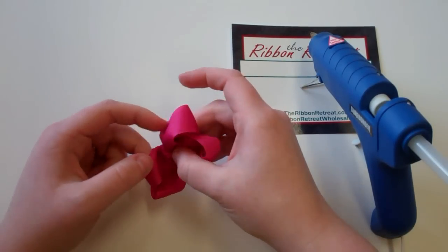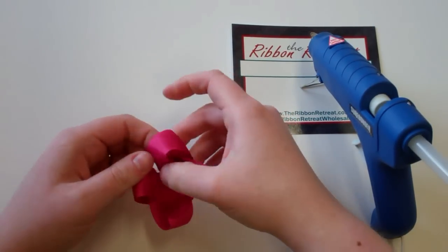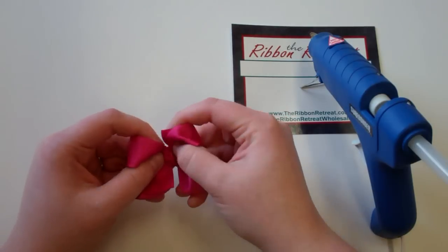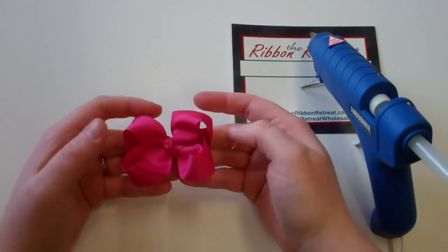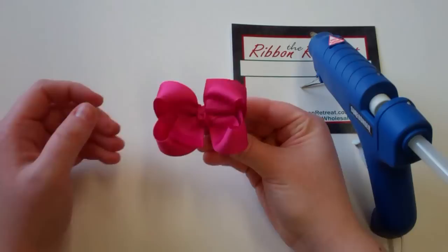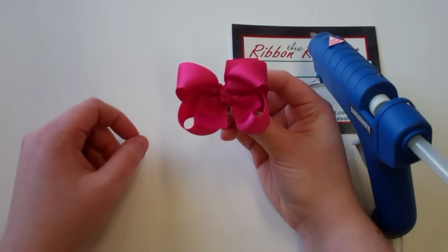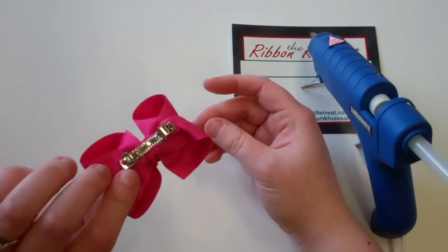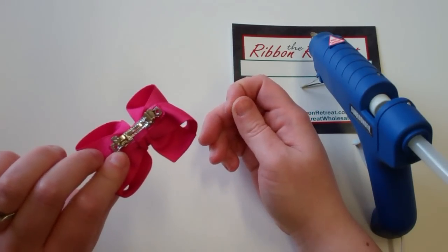Shape your bow back to the way you had it. And there's your finished Twisted Boutique bow with a knotted center with a French barrette on the back.